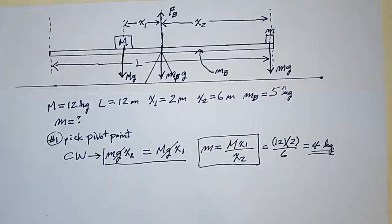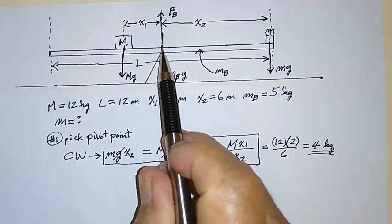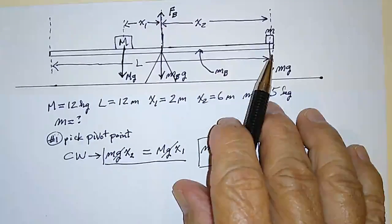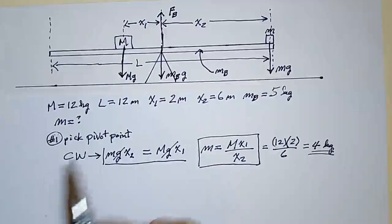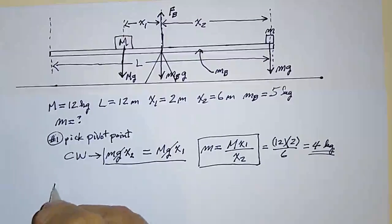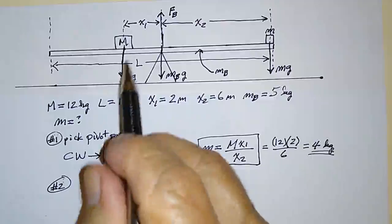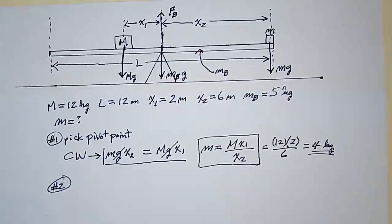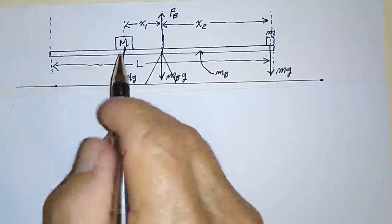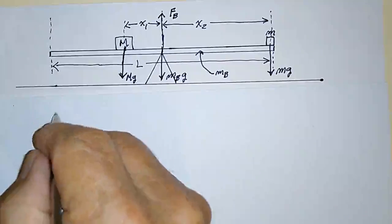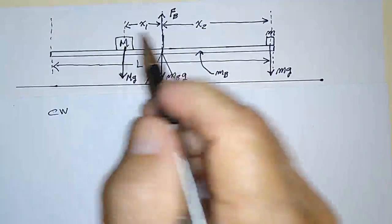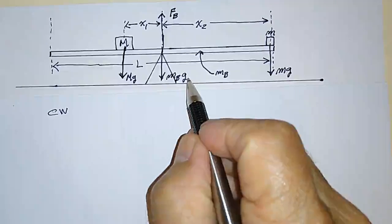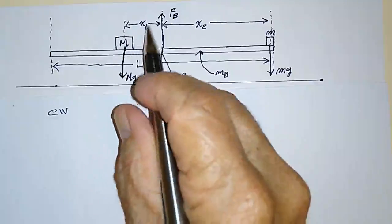Just to show you how this works, it doesn't really matter which point you choose to calculate the torque balance equation. I'm going to pick a different point to show that the algebra is a little more complicated, but you get the same answer picking any other point. For the second example, let's pick the point located at mass big M and calculate torques about that point. Looking at the clockwise torques about this point — there's the torque due to the mass of the board.